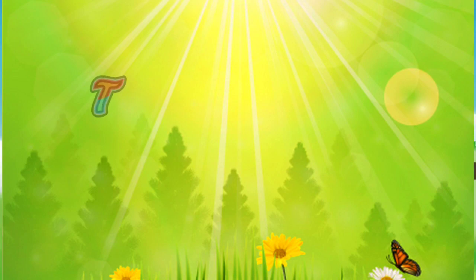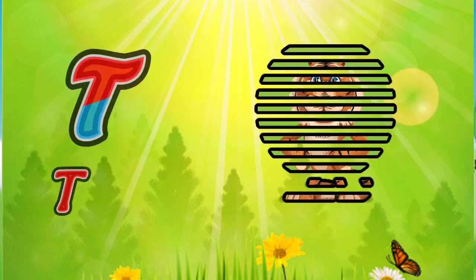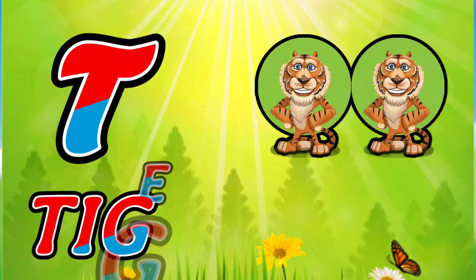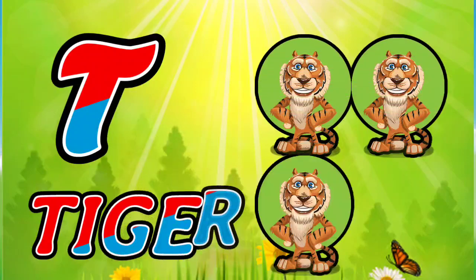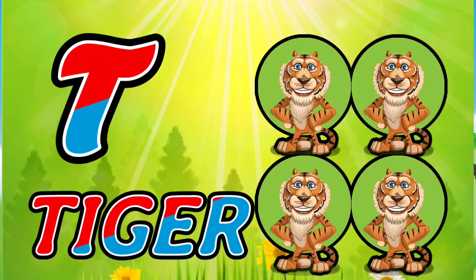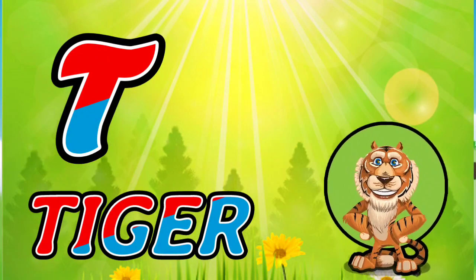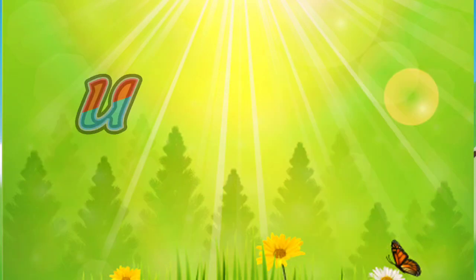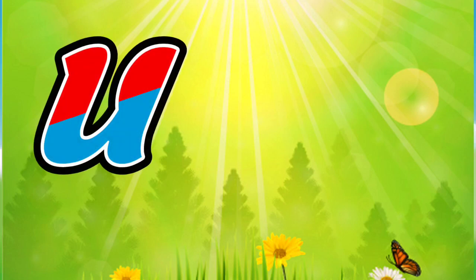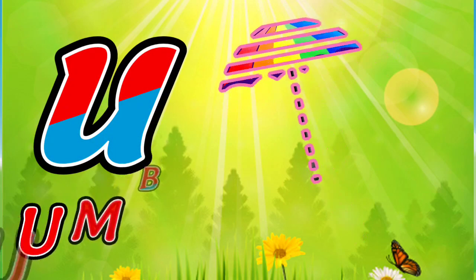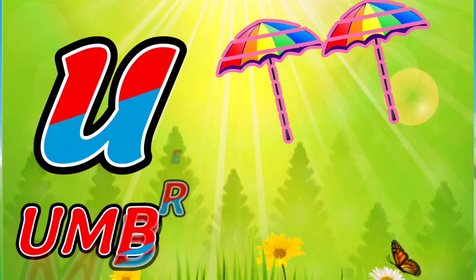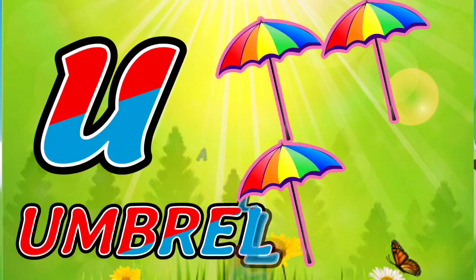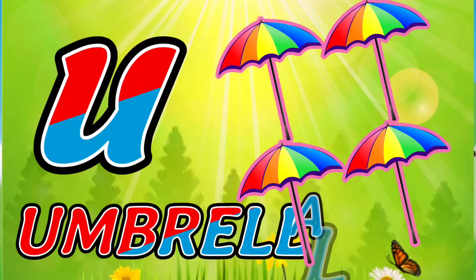T for Tiger. T, I, G, E, R. Tiger. U for Umbrella. U, M, B, R, E, L, L, A. Umbrella.